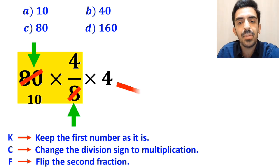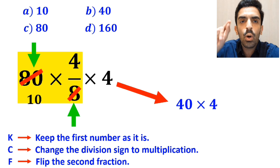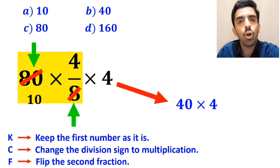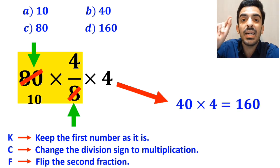As you can see on the screen, the number 80 simplifies with the 8 in the denominator, and instead of this expression we can write 40 times 4, which ultimately gives us the answer 160.